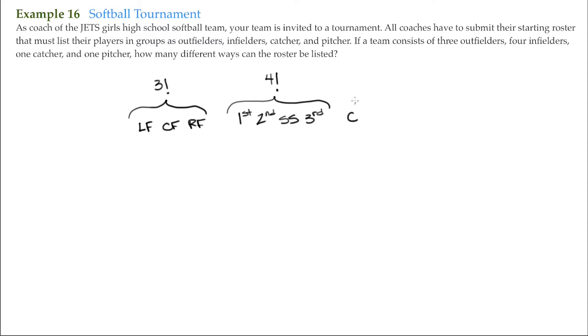Then you have one catcher, that's just one, one factorial is one, and then a pitcher. However, these groups can be listed in a particular arrangement, and that is four factorial for that. This is very similar to the ones that we did for the books on a shelf.